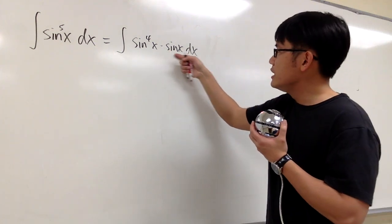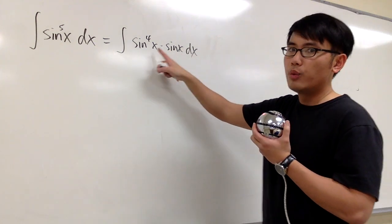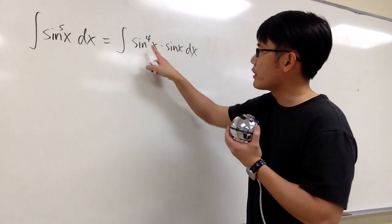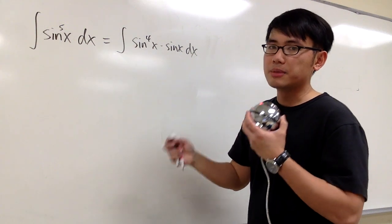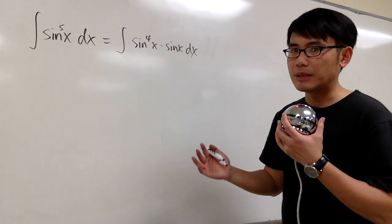And the strategy is, because here we have the sin x factor, we are going to write this power here, sin to the 4th power x, in terms of cosine x. This way, we can just use u substitution.